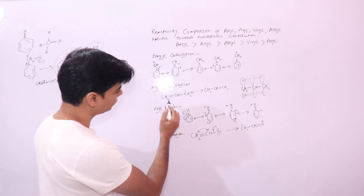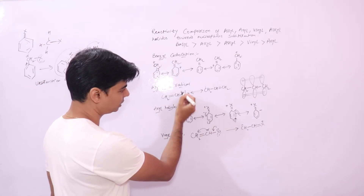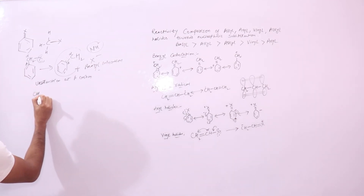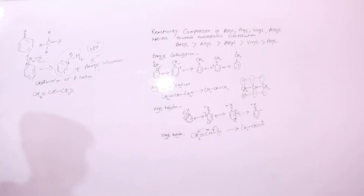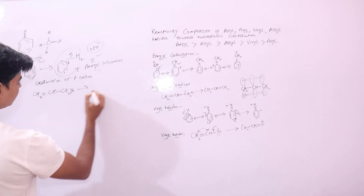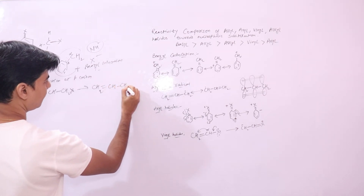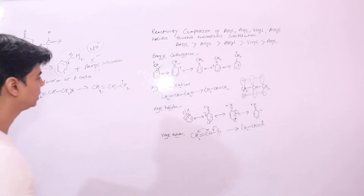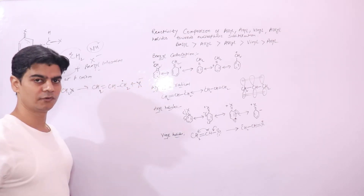The allyl system is where you have a double bond followed by a single bond, and attached to the single bond you have a methyl group. If this is your allyl halide and it tries to undergo nucleophilic substitution, it will form an allyl free radical. This is your allyl free radical. Let's see how this will promote nucleophilic substitution.